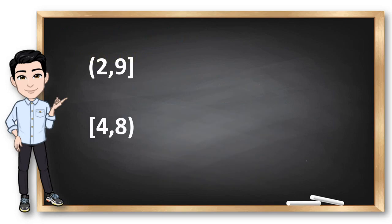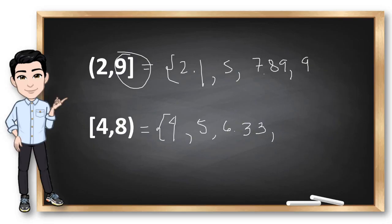Here, a is included but b is not included because this is a parenthesis. Let me give an example. In this interval, we can see here that 2 is beside the open parenthesis. So, meaning the 2 is not included in our set. So, if I give possible elements, is 2 possible? No, but 2.1 is possible because 2.1 is a real number greater than 2. 5 is also possible, 7.89 is possible, 9 is possible. Why is 9 possible? Because we used a bracket. How about in this interval? Yes, 4 is included in the set. 5 is also included. 6.33 is also included. But 8 is not because this is an open parenthesis.